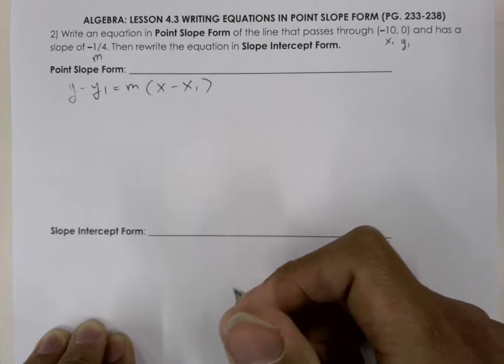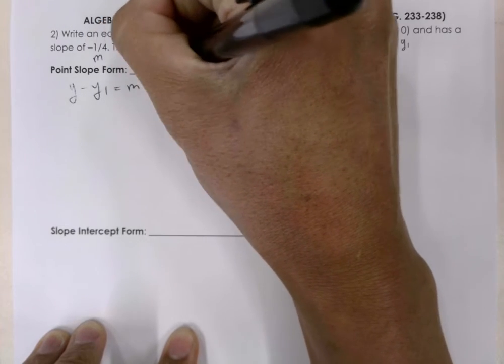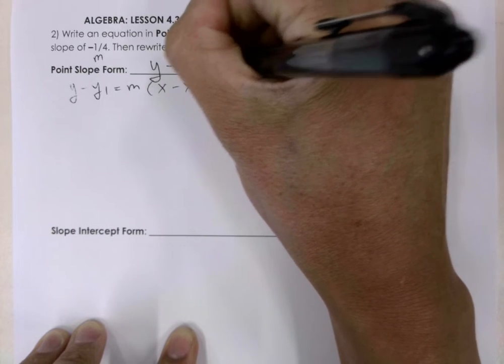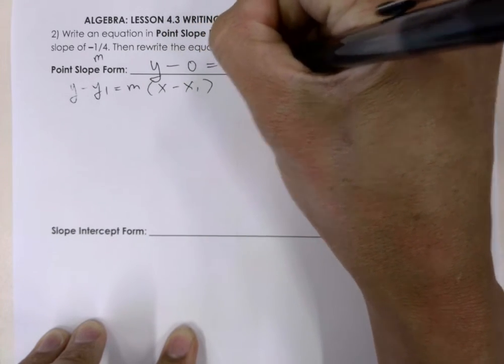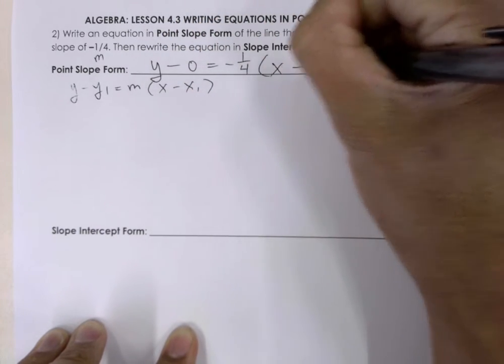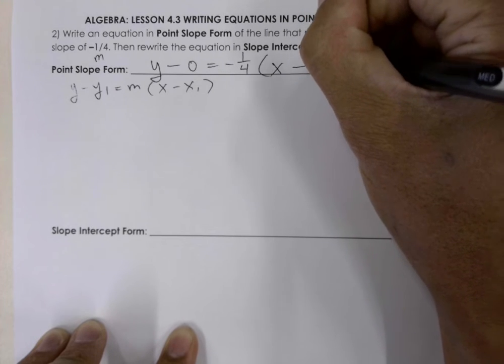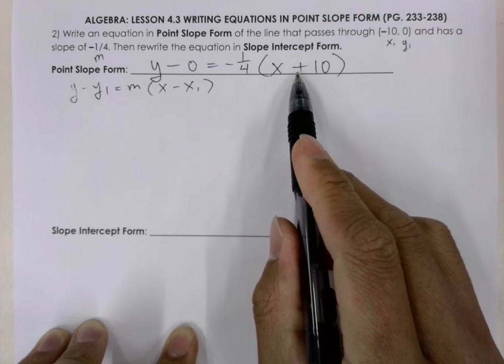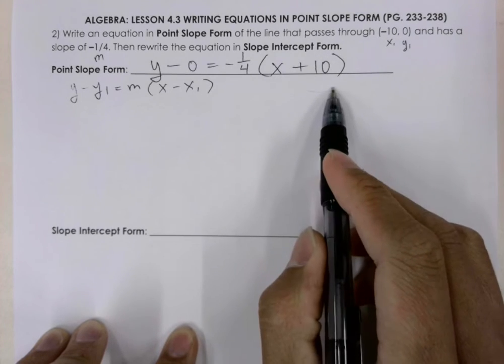So let's go ahead and do that. y minus 0 is equal to negative 1 over 4 parentheses x minus a negative 10. So that becomes positive 10 because we have minus a negative becomes positive 10.